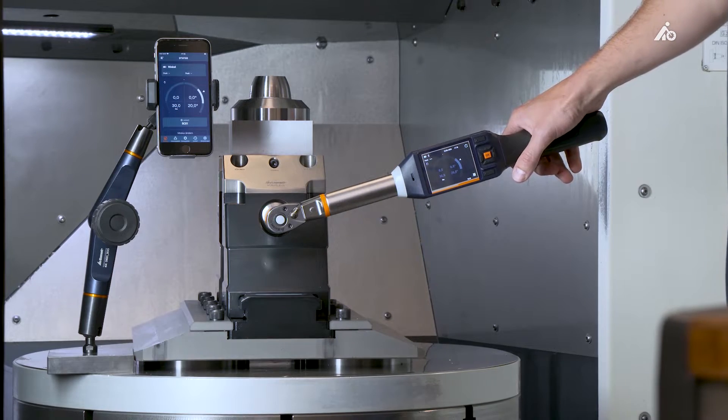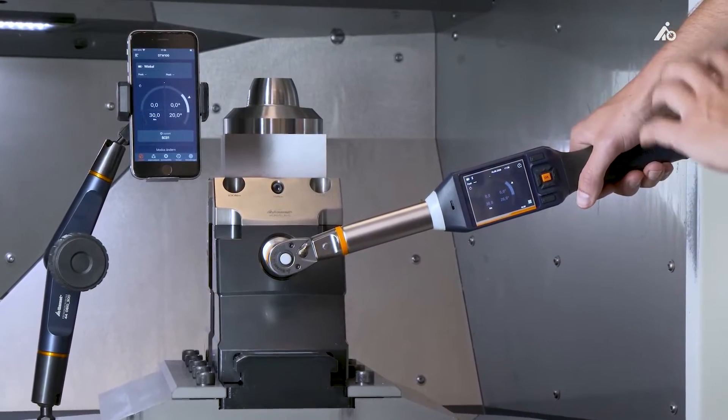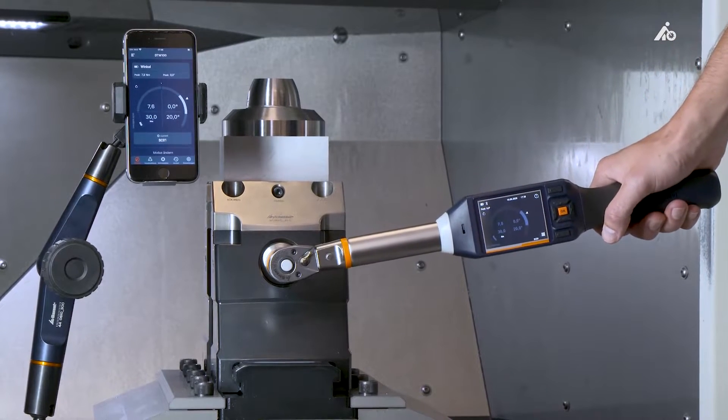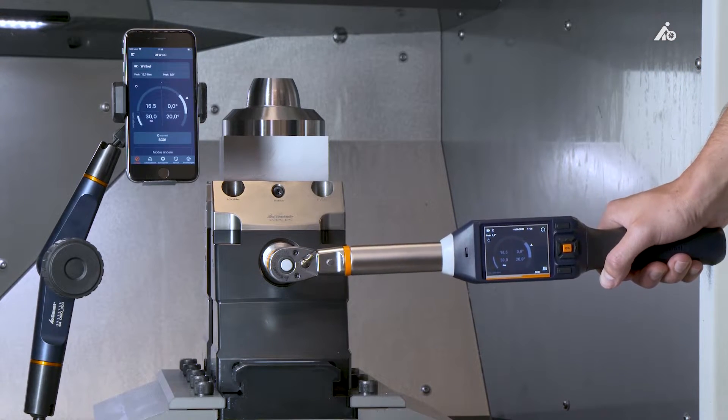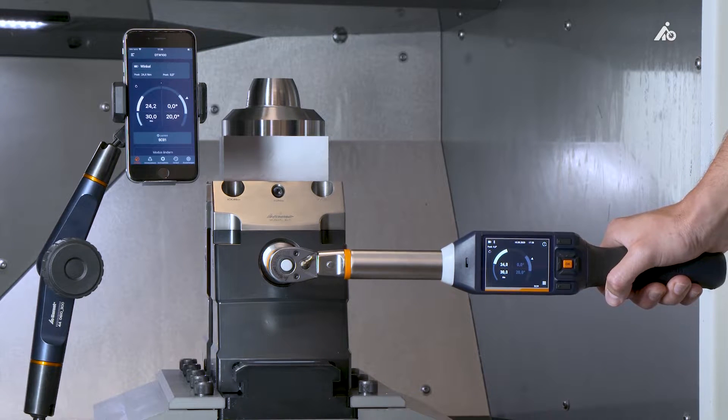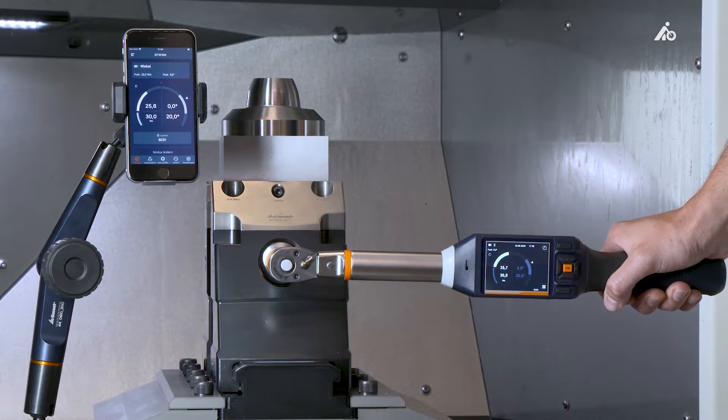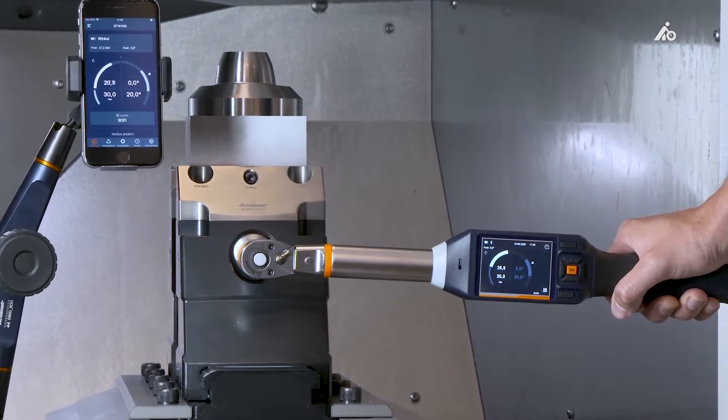We have now activated the fastening operation. The wrench is connected to the app, and when I start to tighten the screw, you can see how the scale fills up. First, the torque is measured until the joining torque is reached. When the joining torque is reached, the wrench vibrates briefly once, the LED flashes yellow once, and you begin to measure the angle of rotation.